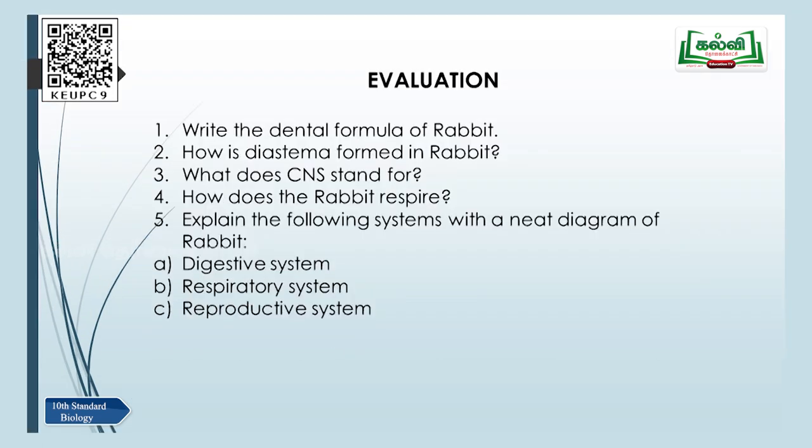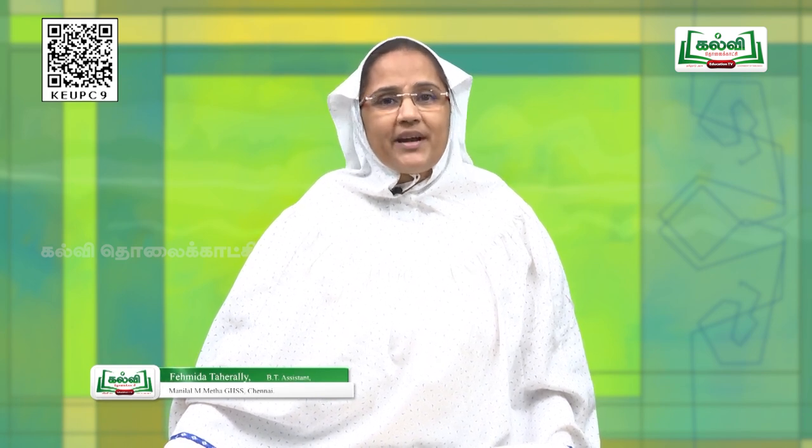Evaluation questions: Write the dental formula of rabbit. How is diastema formed in rabbit? What does CNS stand for? How does the rabbit respire? Explain the following systems with a neat diagram: digestive system, respiratory system, and reproductive system of the rabbit. With this, Unit 13 — structural organization of animals — is completed. Wishing each one of you all the best. Do not waste your time; utilize this time to read the lesson again. Thank you very much, children.